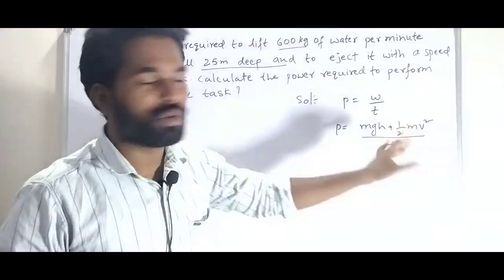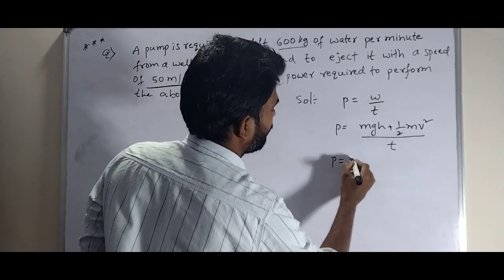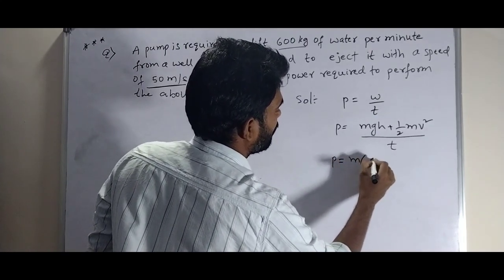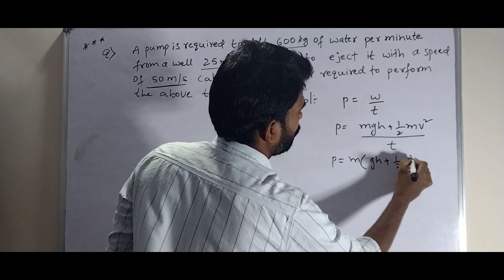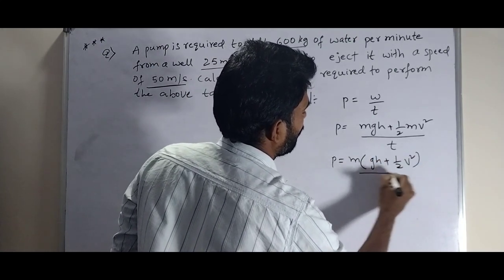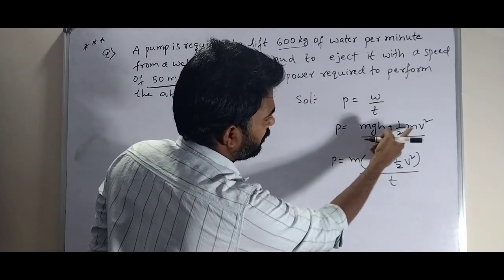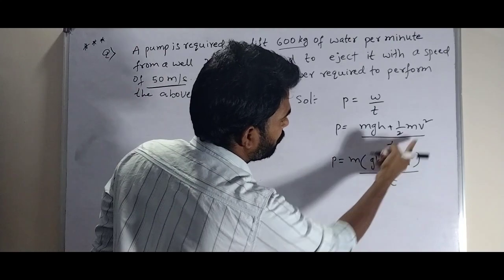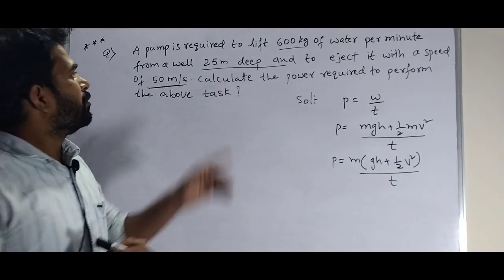We can factor this as P equals M by T times GH plus 1 by 2 V square.